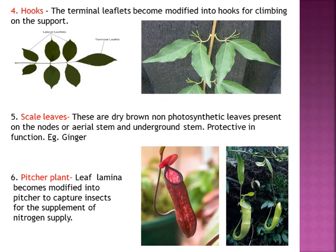The next modification is scale leaves. An easy example is ginger — adrak — which you have in your kitchen. You will see brown, dry, non-photosynthetic scale leaves on its surface. They are present on the nodes of the aerial stem or underground stem. These dry brown scale leaves are protective in function — they protect the nodes. They have no other function apart from protection.